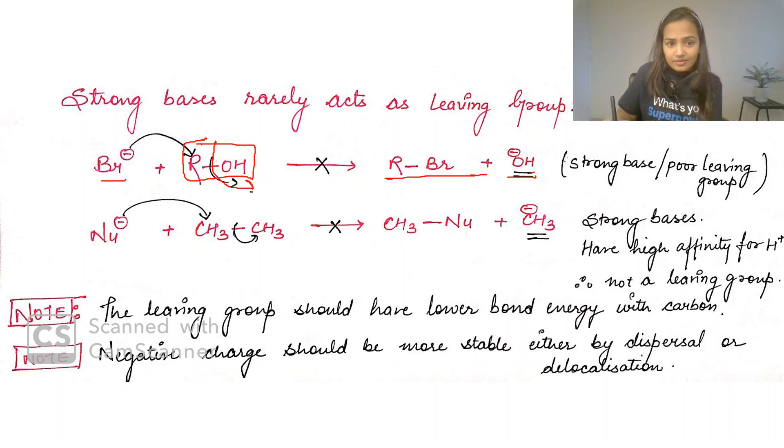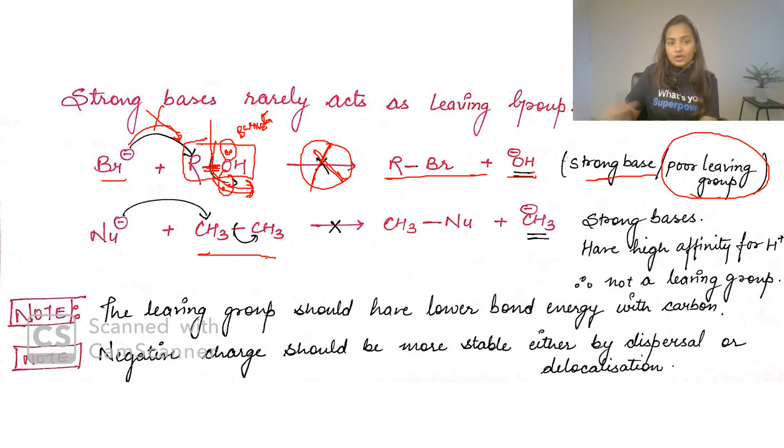You broke this bond without considering if it's a good leaving group. Alcohol is not a good leaving group - it's a strong base. Oxygen has two lone pairs available, its basicity is very high. This bond is not weak. You cannot break it so easily. When this doesn't break, bromide attack is out of the question. This reaction will not occur because OH is a strong base and hence a poor leaving group.